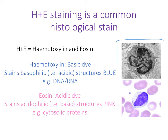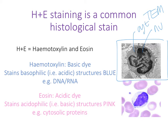If we look at this lymphocyte here — this is a transmission electron microscope image — we can see that there's a lot of nucleus and relatively little cytosol. The nucleus is full of DNA and RNA, so when we do an H&E stain it will stain really strongly blue.